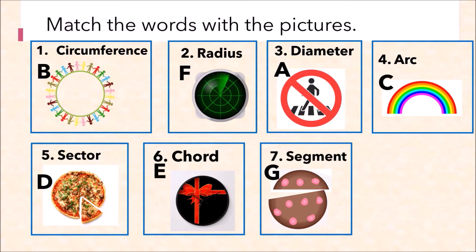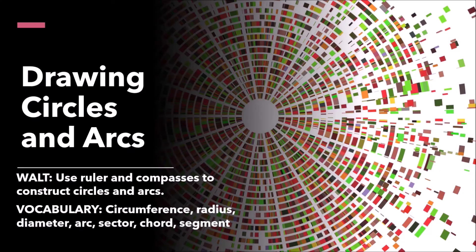In this lesson we're going to draw circles and arcs using a pair of compasses, a ruler, and a protractor. The keywords that we will be using are circumference, radius, diameter, arc, sector, chord, and segment. By the end of this lesson you will be able to use these words confidently.